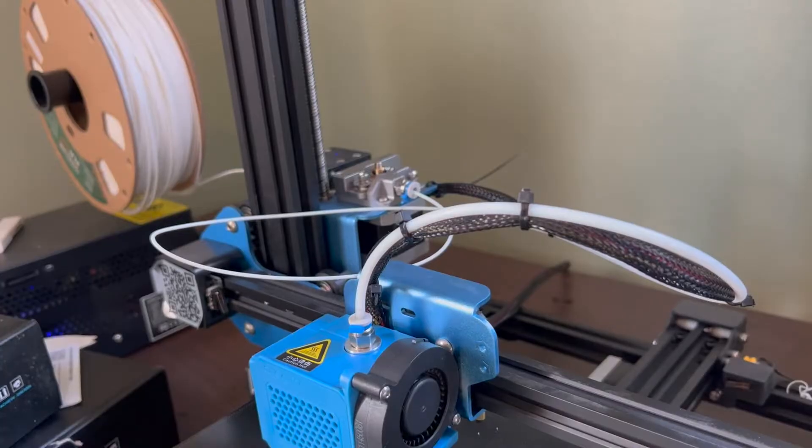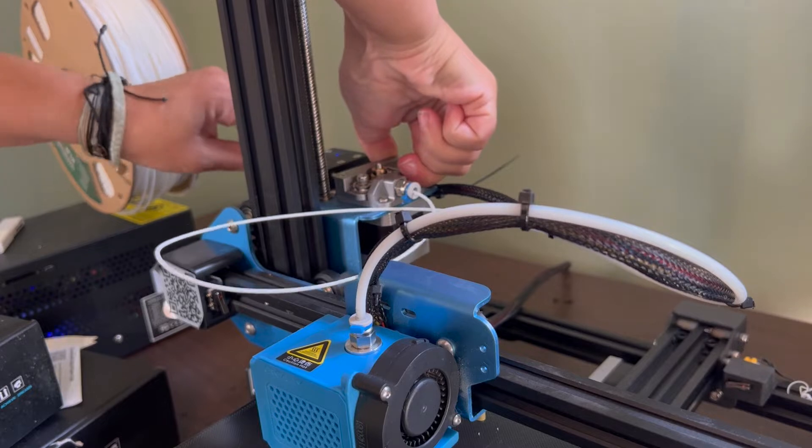The first thing you want to do is heat up your nozzle to remove your filament and pull it out so you can remove the tubing.